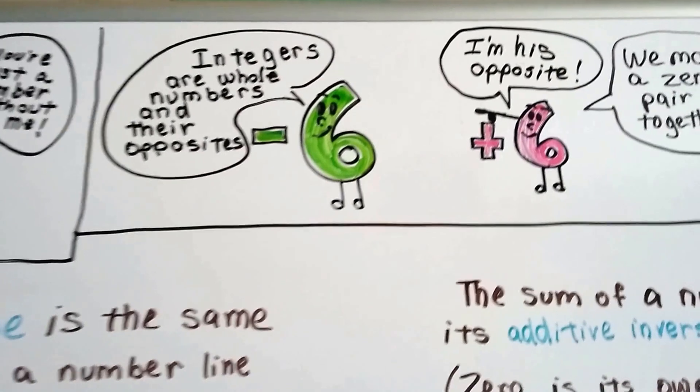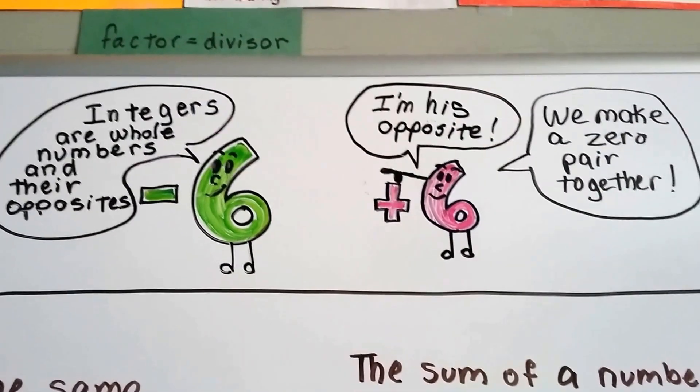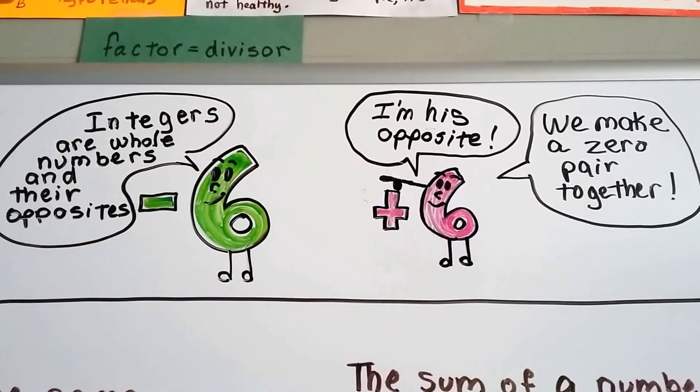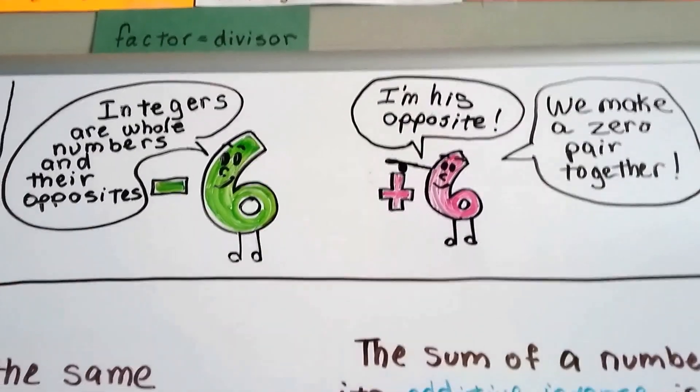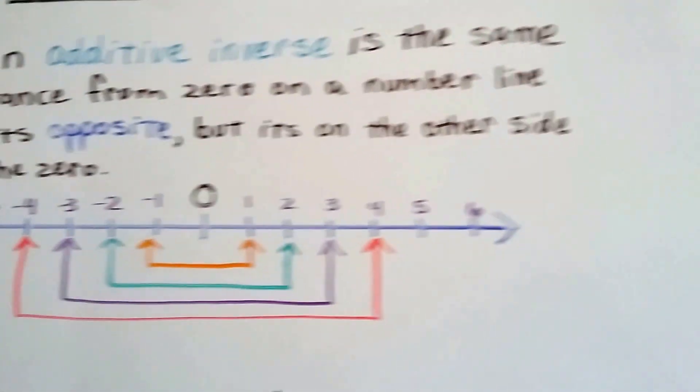Do you remember about integers and their opposites? This little negative 6, his opposite is the positive 6, and together they make a zero pair. Well, that's the additive inverse.